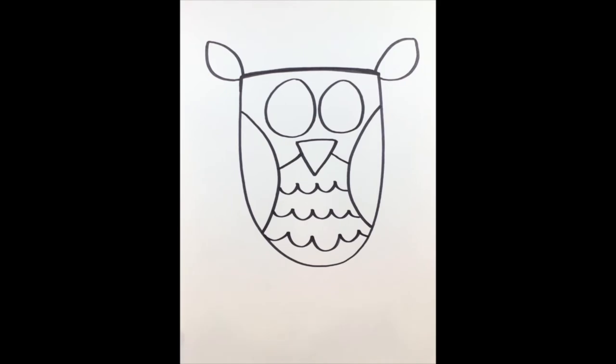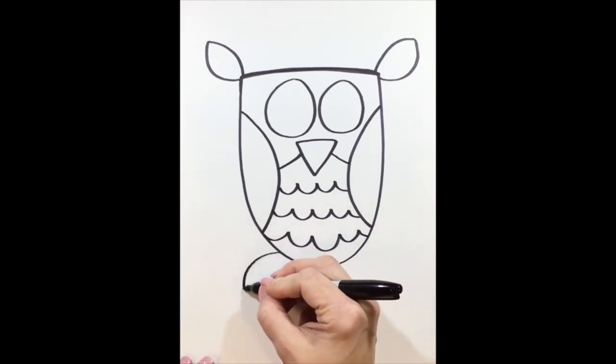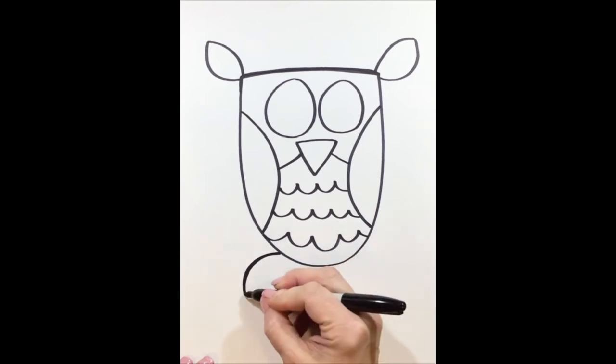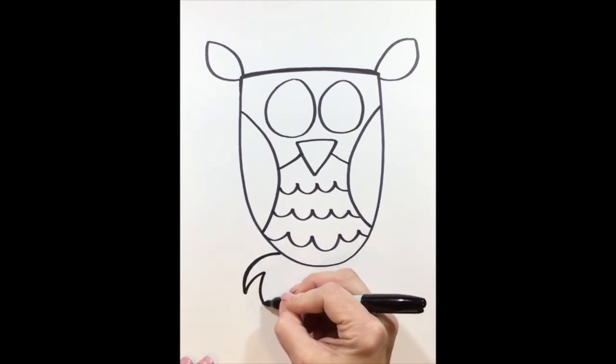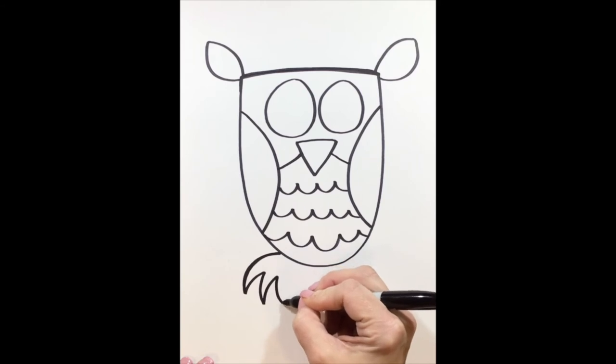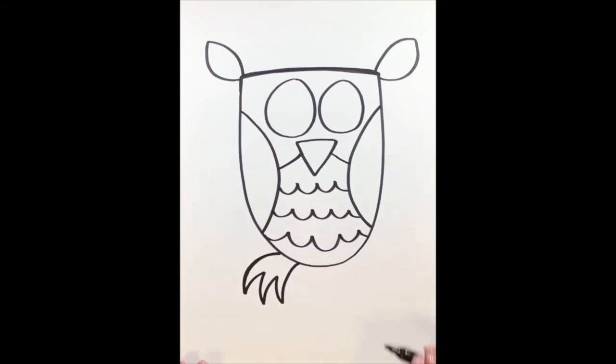Our next step, we're going to add the feet of our owl. It's going to be a curved line out, and then it's going to curve back and down, back, down, and back to connect to the body. Same on the other side, curved line out and back, and down, and back, down, and back.